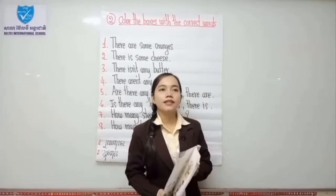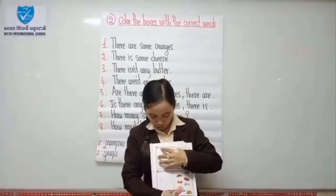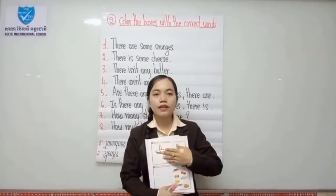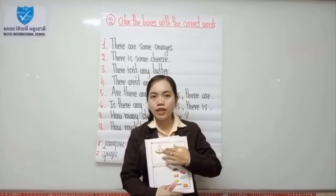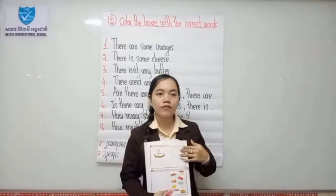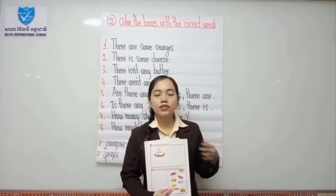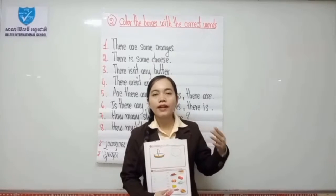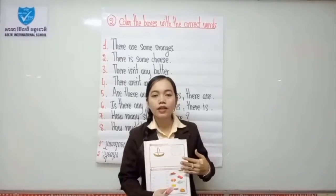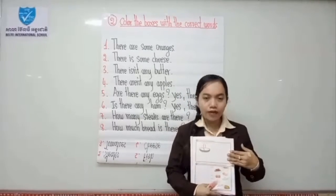Now let's continue to exercise number 3. I want you to draw and write about yourself. Here is the basket — you can draw any kind of food or drink and write it below. This one is about my favorite sandwich. You've already learned about sandwiches, but you can draw another kind of sandwich on the plate and write it down. I'll give you 5 minutes.